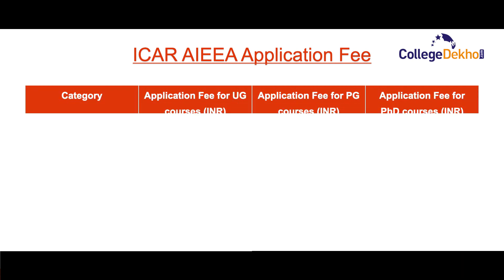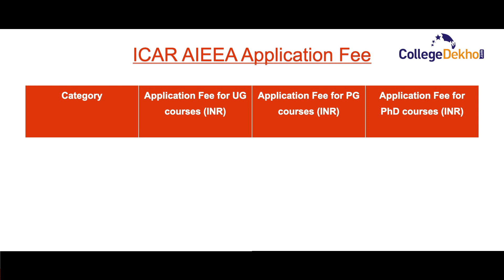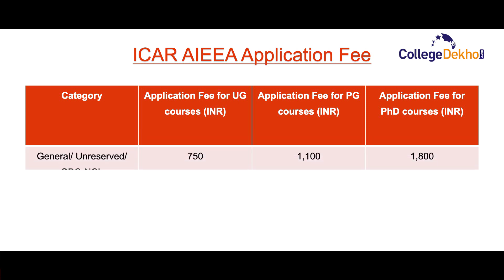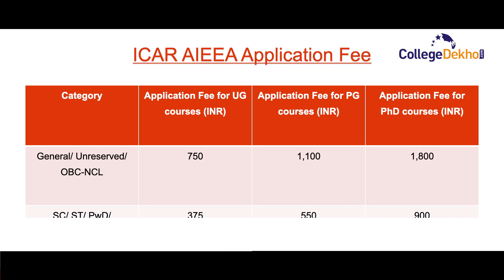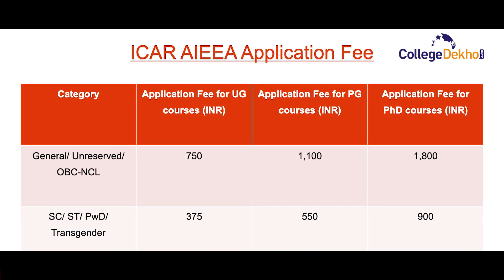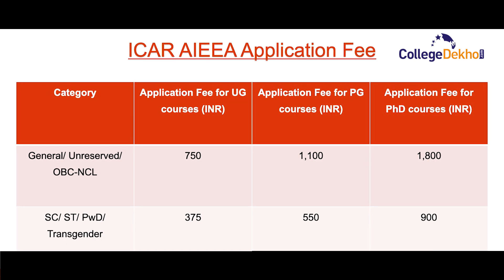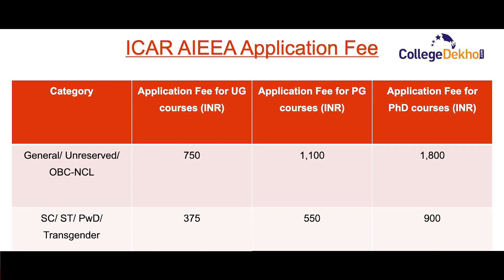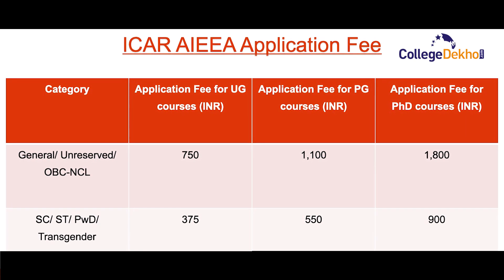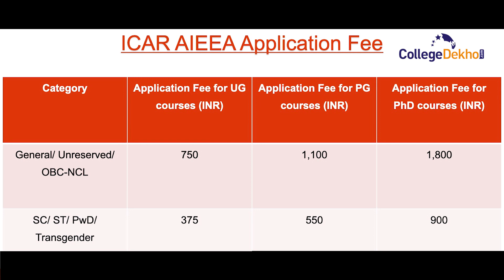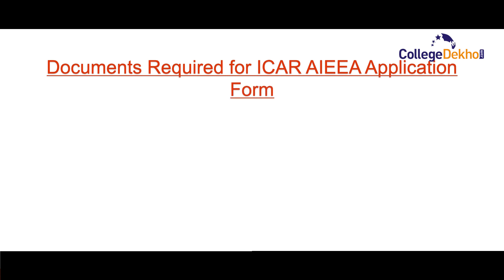The application fee for ICA or AIEEA is divided by category and course level. For UG courses, General/Unreserved and OBC candidates pay 750 rupees, while SC, SC-PWD, and other reserved categories pay 375 rupees. For PG courses, unreserved categories pay 1,100 rupees and reserved categories pay 550 rupees. For PhD courses, unreserved categories pay 1,800 rupees and reserved categories pay 900 rupees.